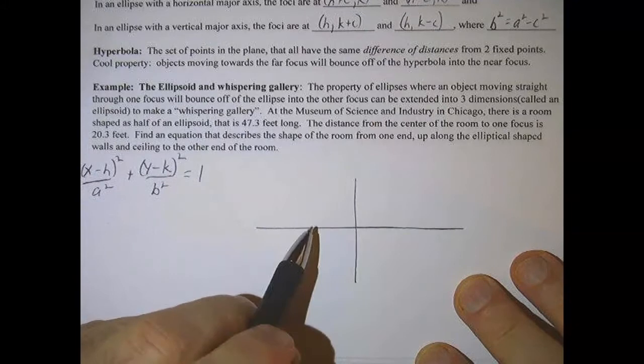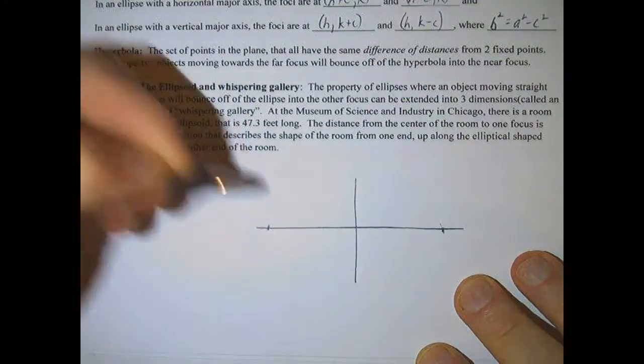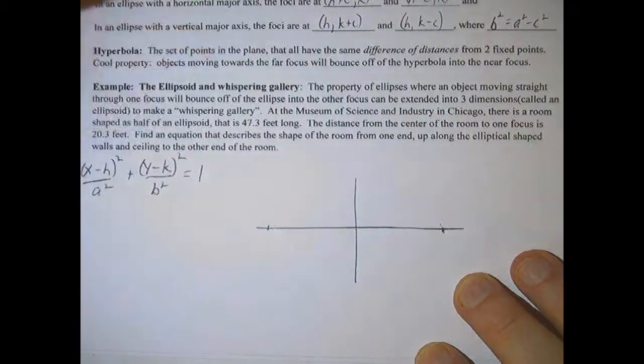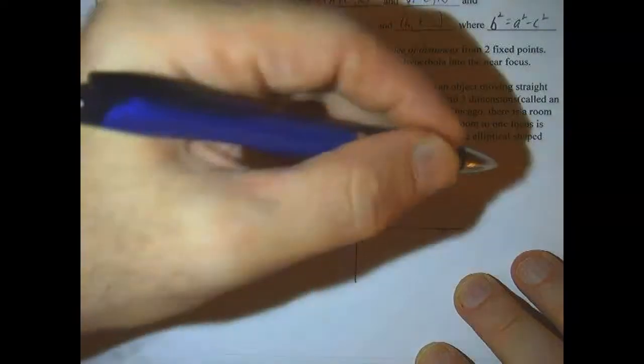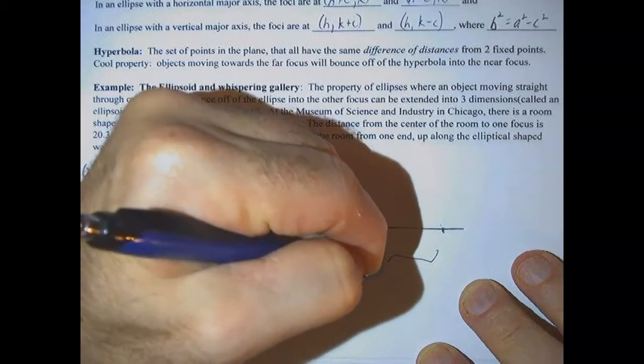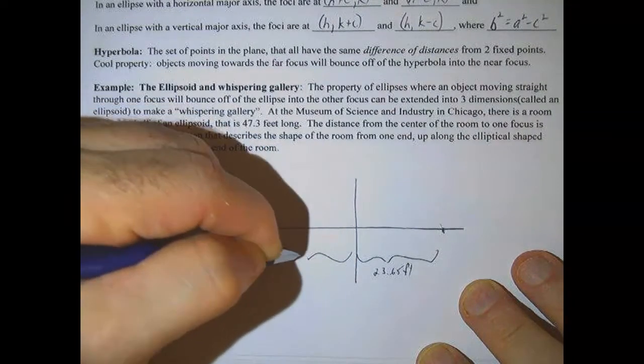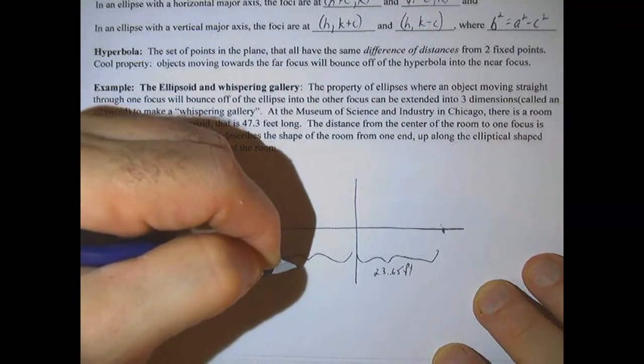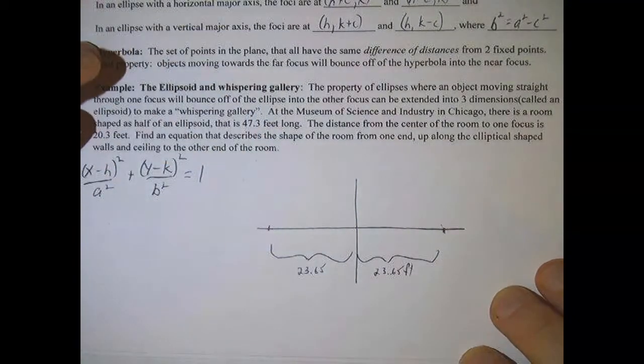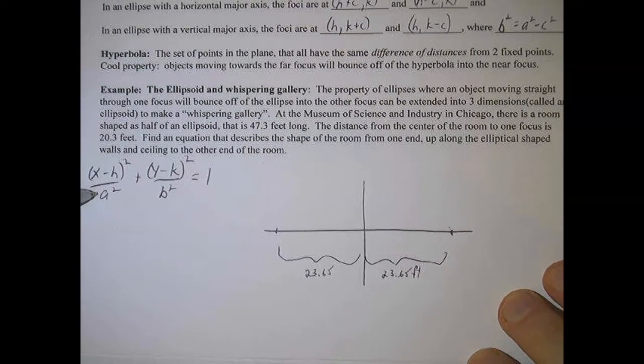So what we're told here is that this room is a half-shaped ellipsoid that's 47.3 feet long. So the entire length is 47.3 feet, which means the two ends of the ellipse, this would be the major axis, the way that we're going to draw it, will each be half of 47.3, which is 23.65.